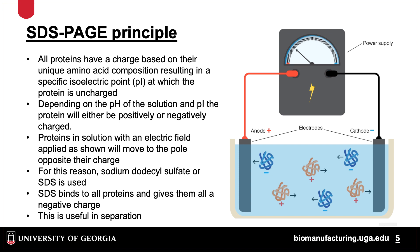Depending on the pH of the buffer and the isoelectric point of the protein, the charged protein will move towards the anode or cathode of a solution where an electric current has been applied. Because proteins are not all positively or negatively charged, this presents a problem in separation of proteins based on charge, which is why SDS is added to the protein sample to normalize the charge.